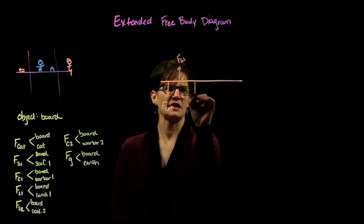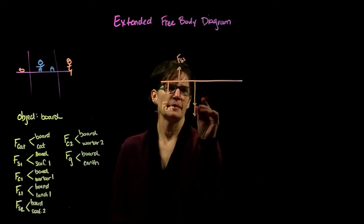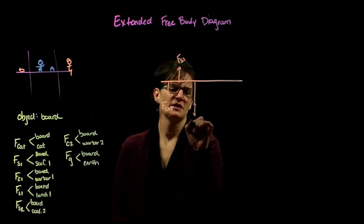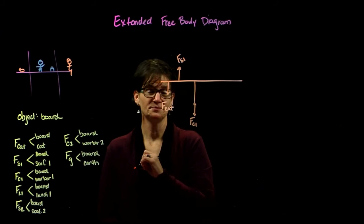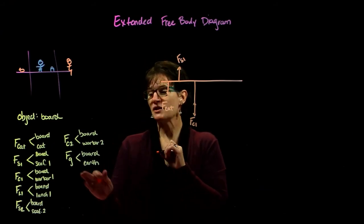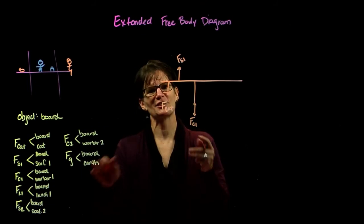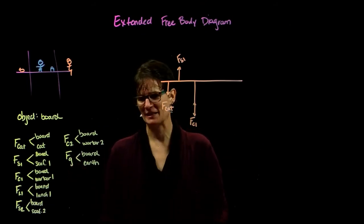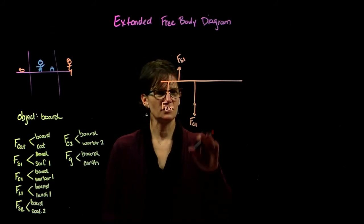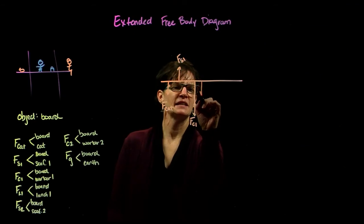We have our construction worker, not quite in the center but slightly off center. She's probably more massive than the cat, maybe a lot more massive. So we have the force of construction worker one. We know that the force of gravity acts in the geometric center of a uniformly distributed object. So we're going to say this board is uniformly distributed, so the force of gravity is acting right in the center.